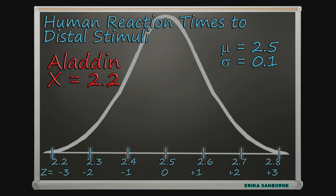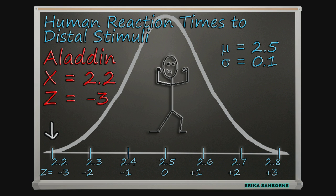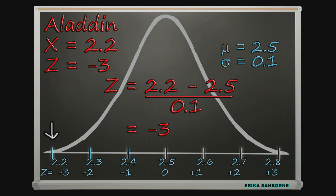His score is 2.2 and the mean is 2.5. Negative 0.3 is Aladdin's deviation score, which says that he's 0.3 seconds faster than average on this test. How many standard deviations is Aladdin to the left of the mean? Aladdin's exactly three standard deviations to the left of the mean. Mathematically, we're doing this.